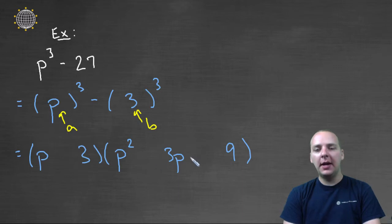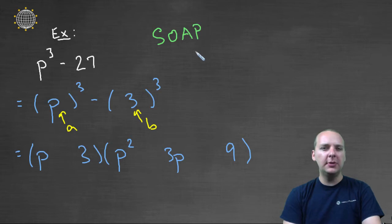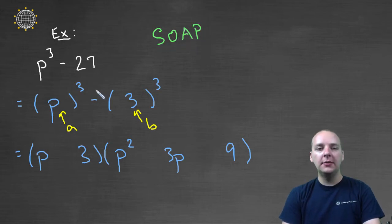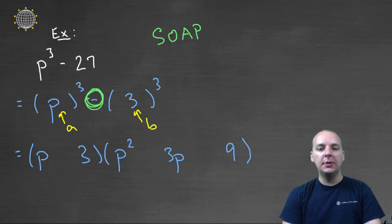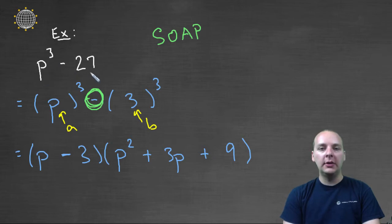Now the only issue is the signs. Remember SOAP: same, opposite, always positive. Since this is a difference of cubes, we put the same sign — minus — the opposite sign — plus — and then always positive. And we're done. This is the factored form of P cubed minus twenty-seven.